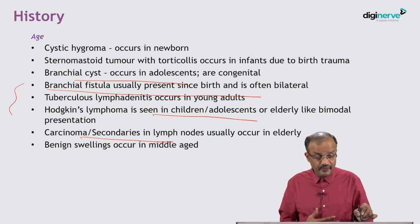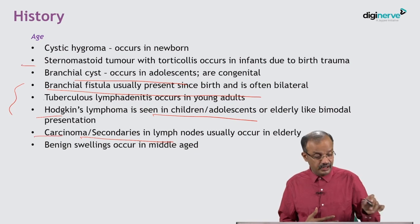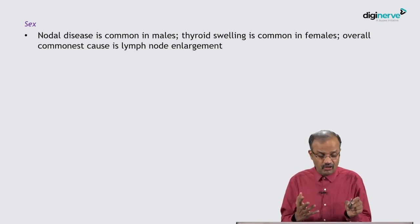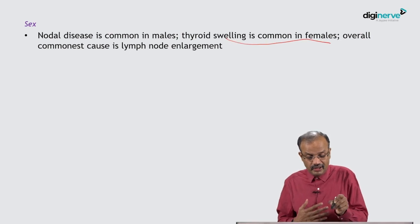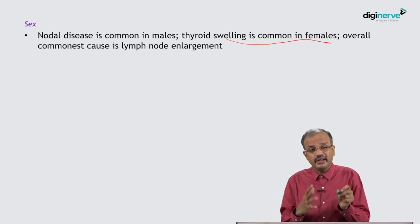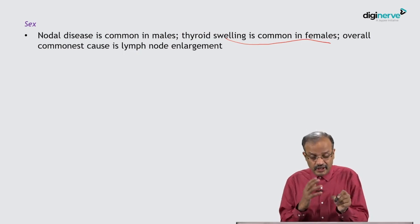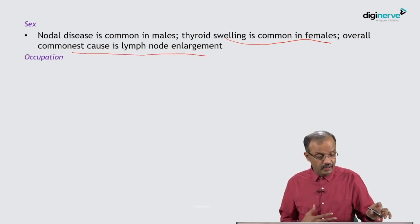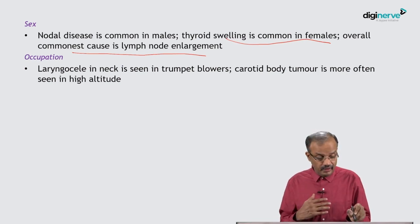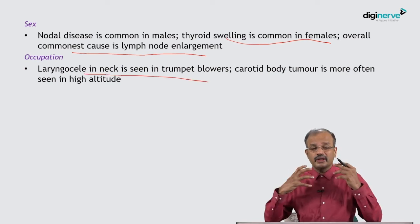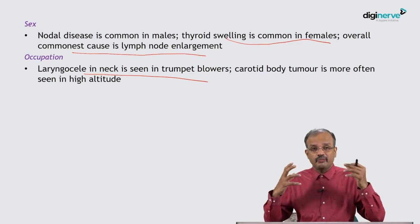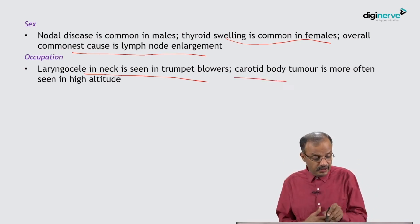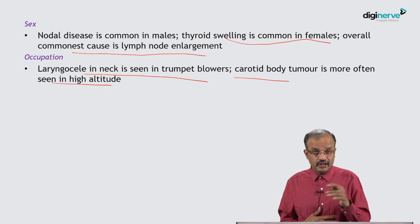The main conditions to be concerned about are tuberculosis, Hodgkin's lymphoma, carcinoma, and congenital conditions. Nodal disease secondaries in the neck are very common in males, while thyroid disease — also a neck swelling — is more common in females. Occupation is also important: laryngocele is common in trumpet blowers, as high pressure through the thyrohyoid membrane forms a projection. Carotid body tumor is seen in people living at high altitude due to temperature and pressure changes.